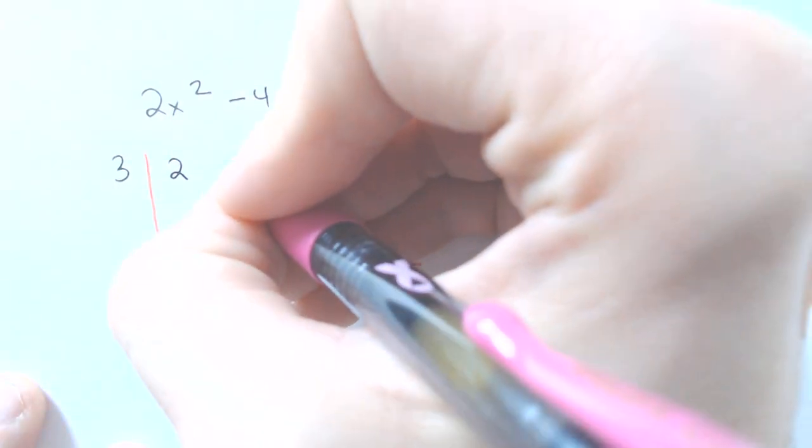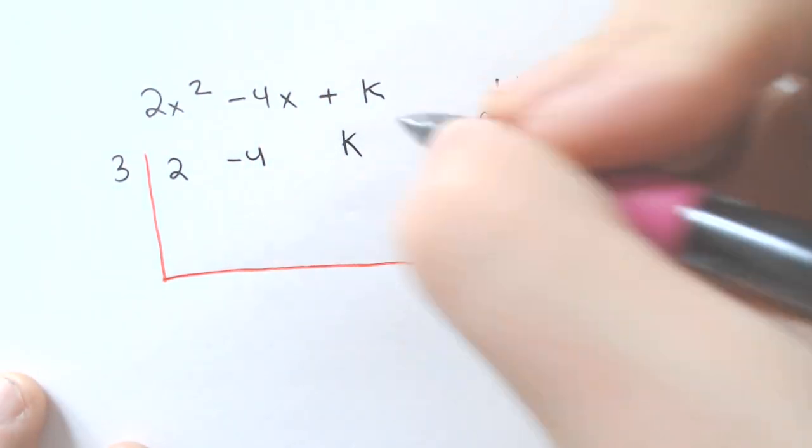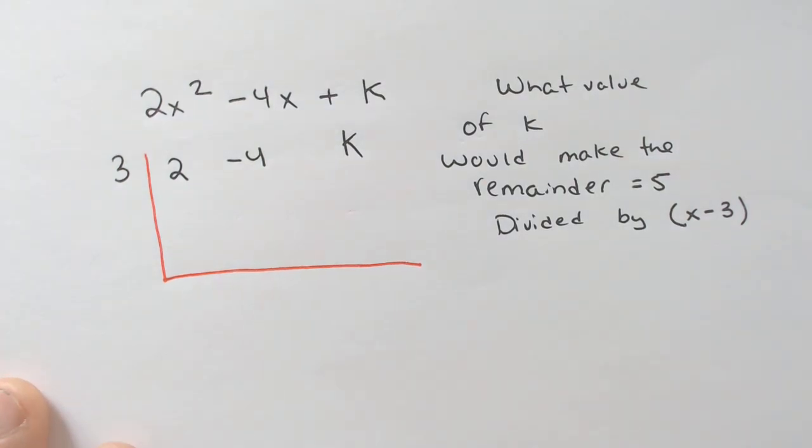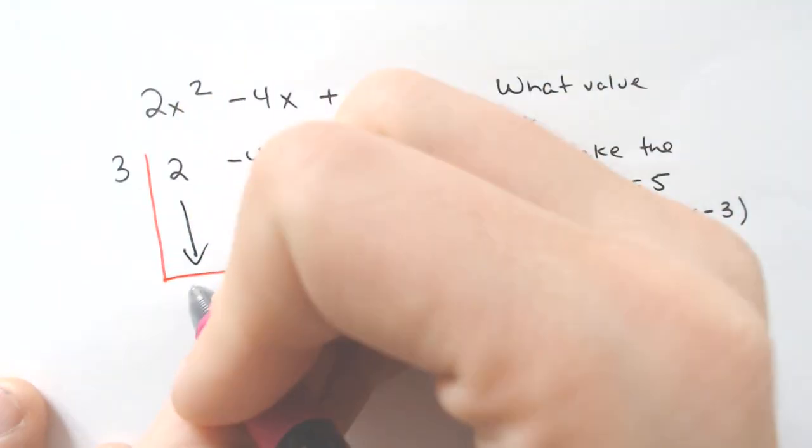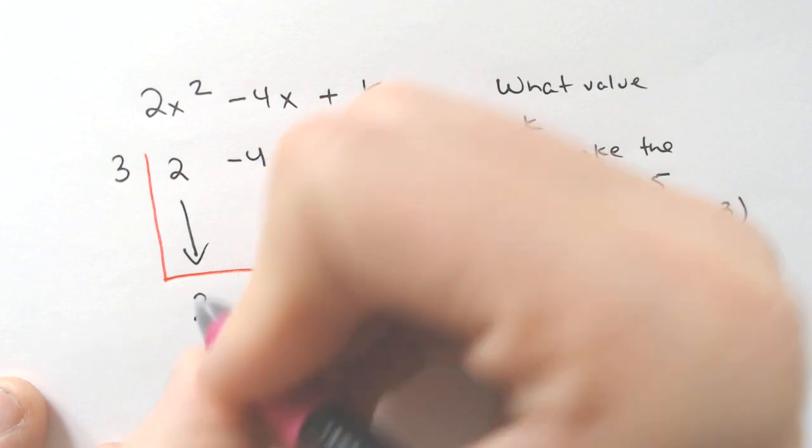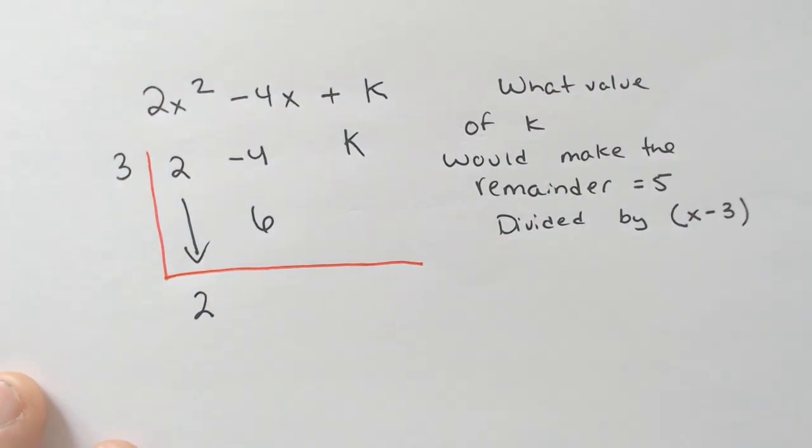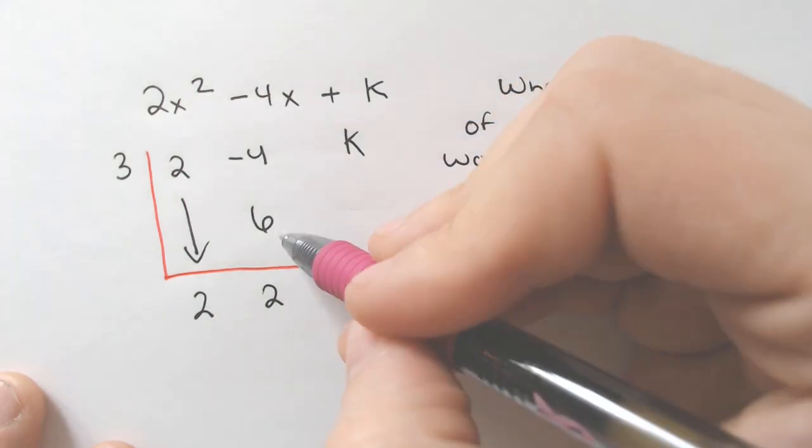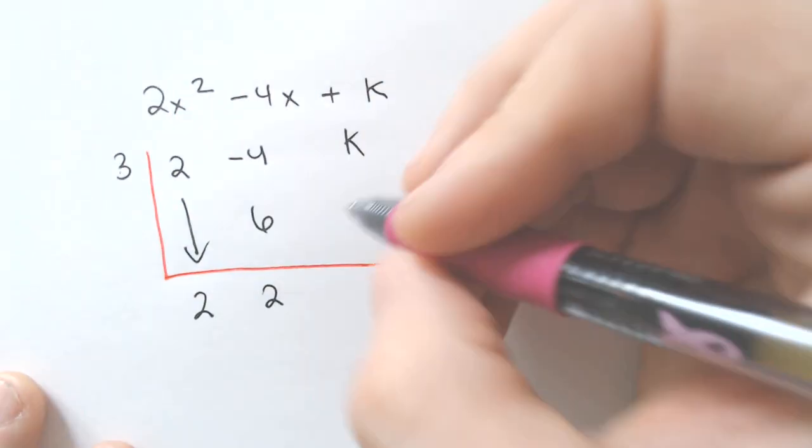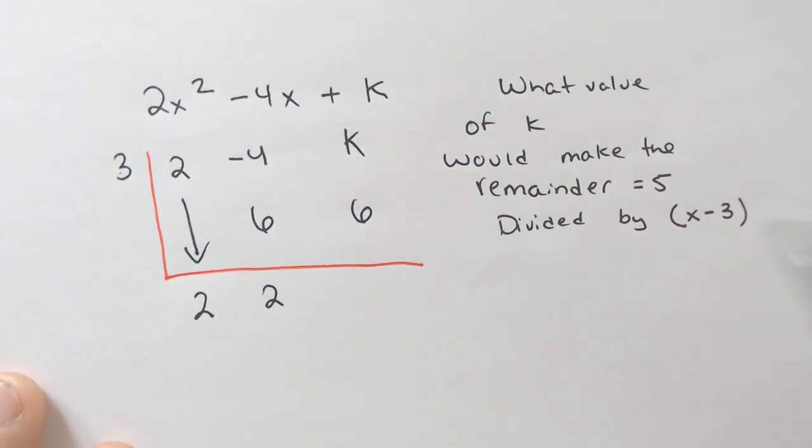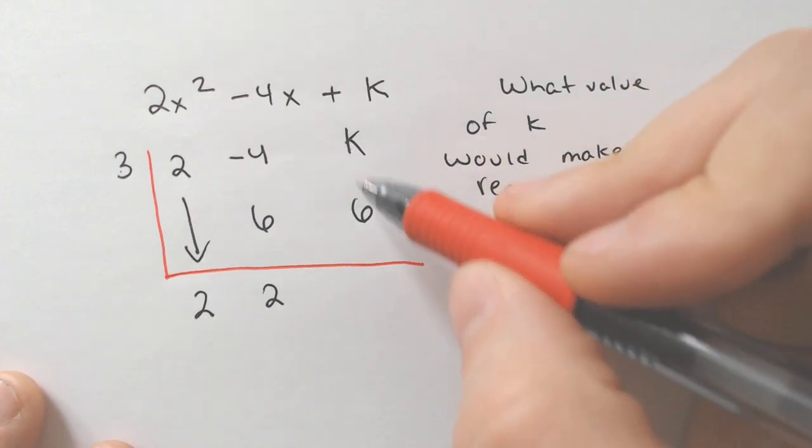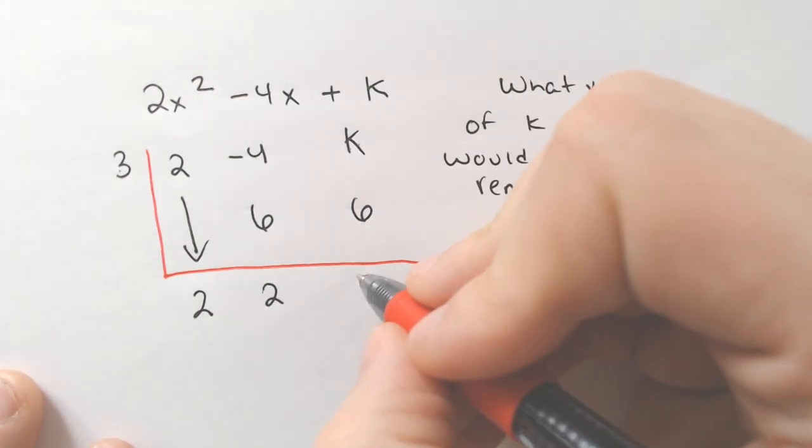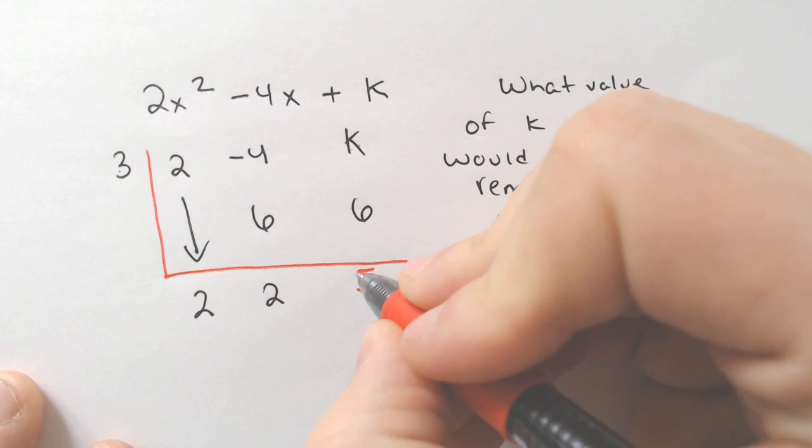These numbers, the 2, the negative 4, and I guess K go right here, and you just keep going like normal. You bring down your 2, you multiply, we're going to get 6, we add straight down, we get 2 again, because negative 4 plus 6 makes 2, 3 times 2 is 6, and then here's where we end up with the dilemma, because we can't really add K and 6.